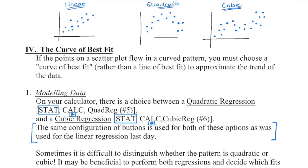We looked at how to model linear data, generate a line of best fit, and then answer some questions based on that data. Similar to that, we're going to take a look today at different types of regression that we can perform — taking a look at the graphs or using the table of values to see what kind of shape we're going to end up with.